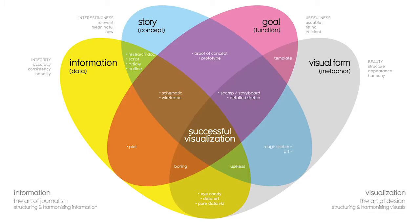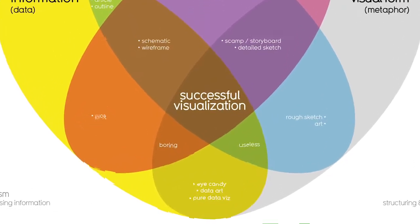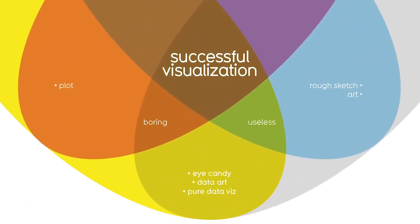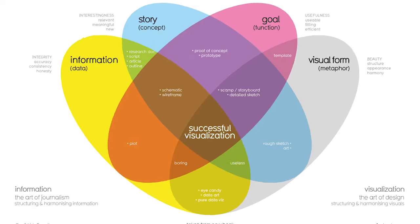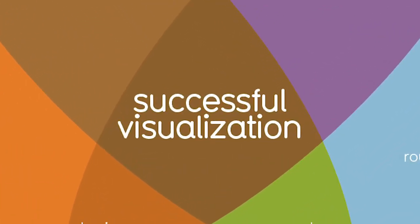For example, if you combined information, goal, and visual form without any story, your visual will probably look fine, but it won't be interesting. On their own, each element has value, but visualizations only become truly powerful and effective when you combine all four elements in a way that makes sense. At Google, I make sure to develop visualizations to tell stories about data that include all four of these elements, and I can tell you that each element is a key to a visualization's success.